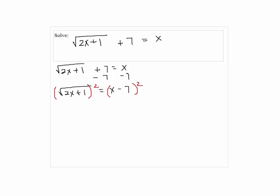Then, we're going to square both sides to get rid of the radical. So we have 2x plus 1 equals x squared minus 14x plus 49.